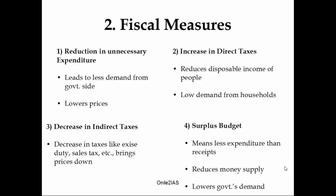The second measure is fiscal measures, which normally deal with policies issued by the government. The first is reduction in unnecessary expenditure, leading to less demand from the government side, lowering prices and reducing inflation. The second method is increase in direct taxes — when the money left with the public is reduced by higher direct taxes, their demand goes down, reducing inflation. The third is decrease in indirect taxes such as excise duty and sales tax, bringing down the final price of goods and services. The fourth is surplus budget — less expenditure than revenue — which reduces money supply and lowers government demand.